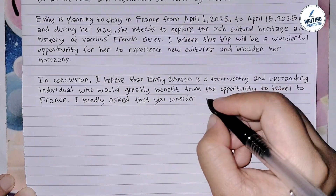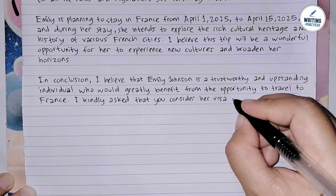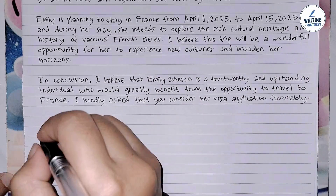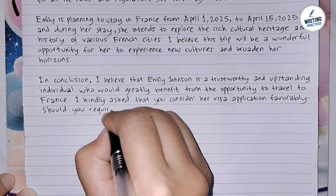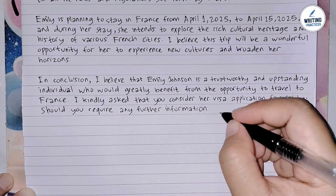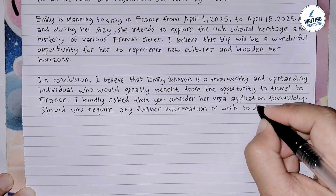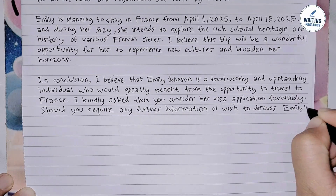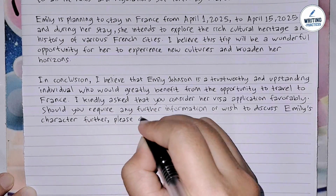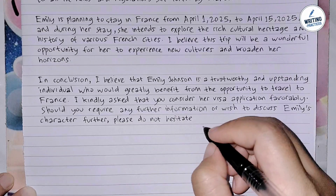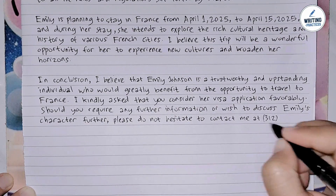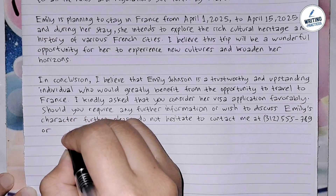Still in the same paragraph, you can also offer further contact. Provide your contact information and invite the recipient to reach out if they need further information or have any questions about the applicant's character. Make sure the recipient understands that you are available for further discussion if needed. Don't forget to provide your phone number and email. For example: 'Should you require any further information or wish to discuss Emily's character further, please do not hesitate to contact me at 312-555-7890 or david.smith@email.com.'